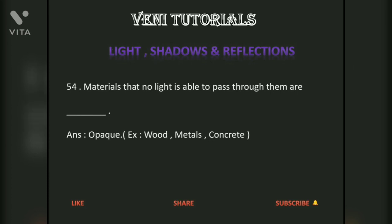Materials that no light is able to pass through them are dash — answer: opaque. Examples: wood, metals, concrete. Thank you.